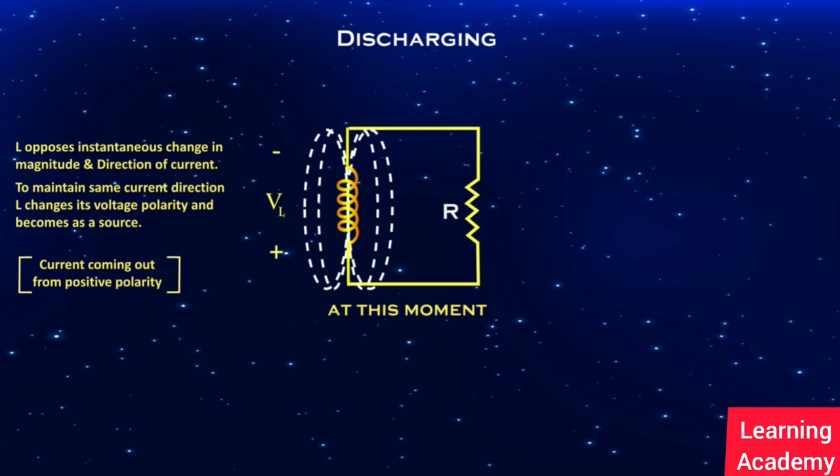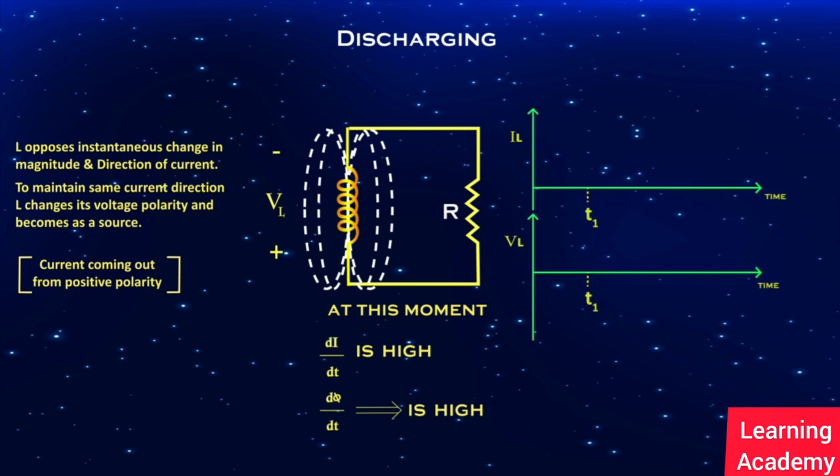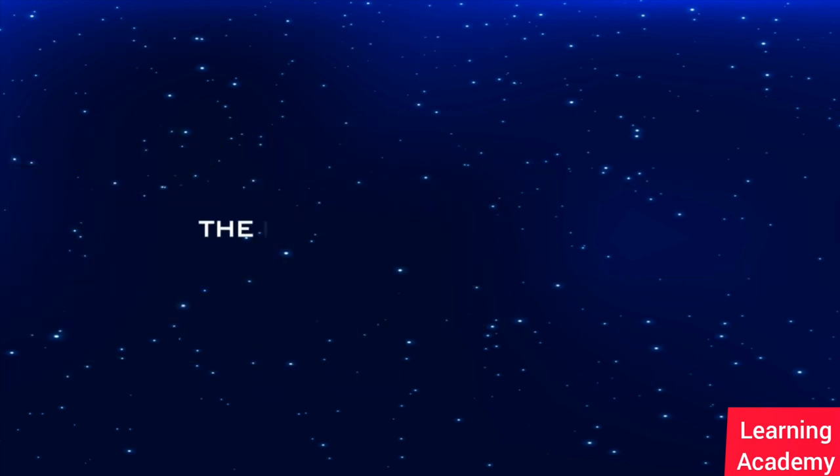The moment resistor is connected, a huge number of electrons try to flow through the circuit. That is, the change in current is high, which means the change in flux is also high. Due to this change in flux, a high back EMF will be developed across the inductor which will oppose the change in current. So the current decays in an exponential manner towards zero, and the induced voltage also becomes zero. That is, the inductor is completely discharged.